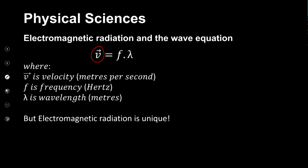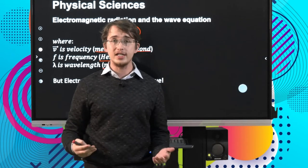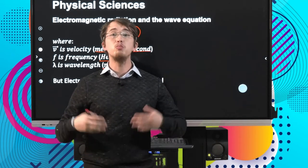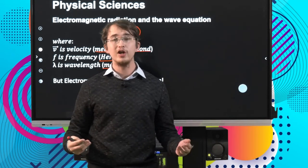So let's have a look at the wave equation. In the wave equation we already know that you can calculate the velocity of a wave in meters per second by taking the product of the frequency of the wave, which is measured in hertz, and its wavelength, which is measured in meters. But electromagnetic radiation is quite unique, and for that reason we have to modify the wave equation so that it makes sense in terms of electromagnetic radiation.